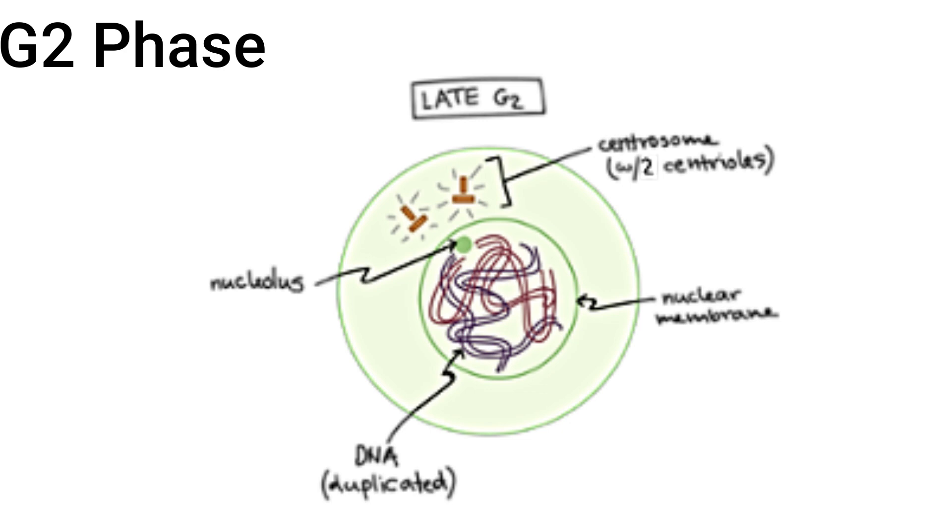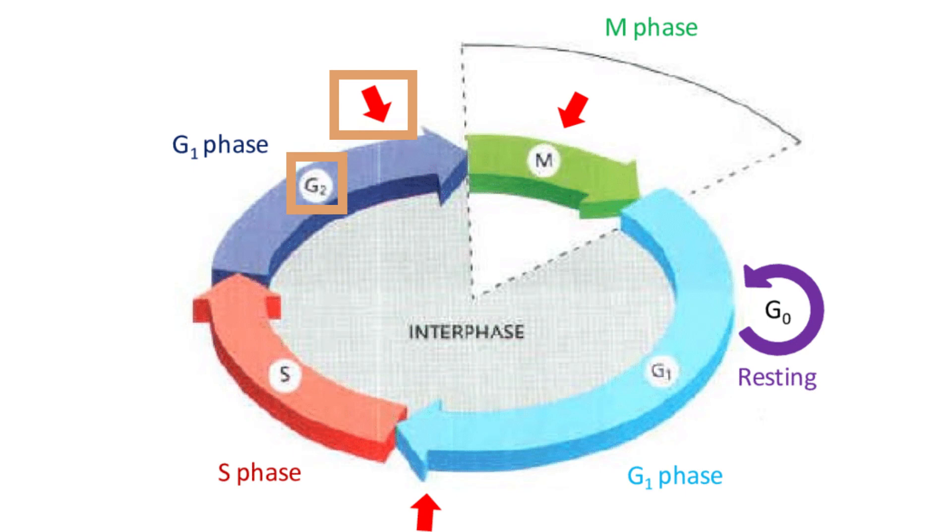To avoid creating cells that don't work properly, the cell will go through another cell cycle checkpoint called the G2 checkpoint. This checkpoint will check for any DNA damage, make sure that the DNA was completely replicated in replication, and also assess other cell conditions, such as the amount of cell proteins and organelles.